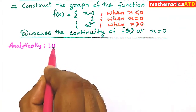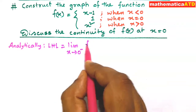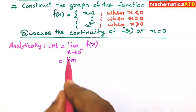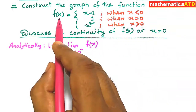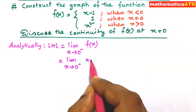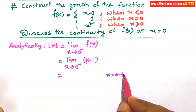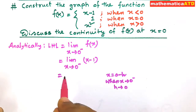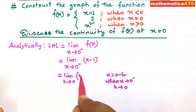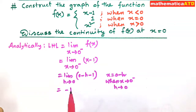Let us now discuss the continuity analytically. First, we take LHL: limit as x tends to 0 negative of f(x). Since x is less than 0, f(x) = x minus 1. Let x = 0 minus h, so when x tends to 0 negative, h tends to 0. The limit becomes: limit as h tends to 0 of (0 minus h minus 1), which gives the limiting value of negative 1.